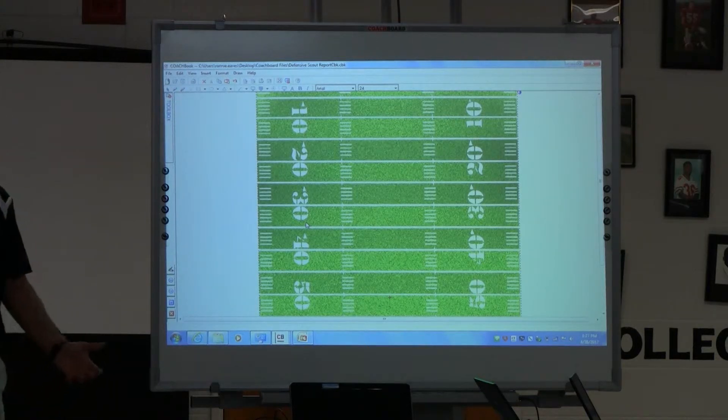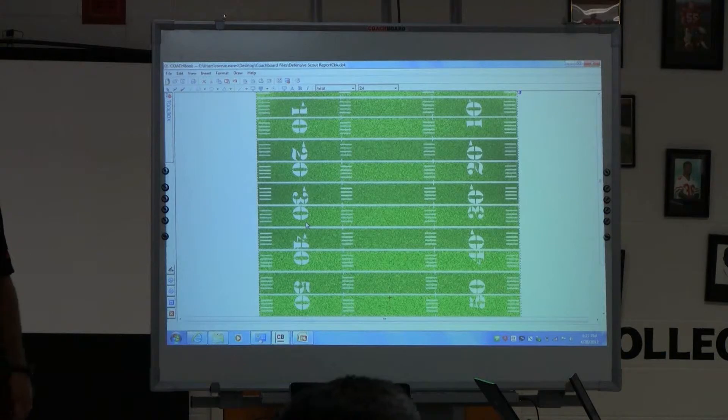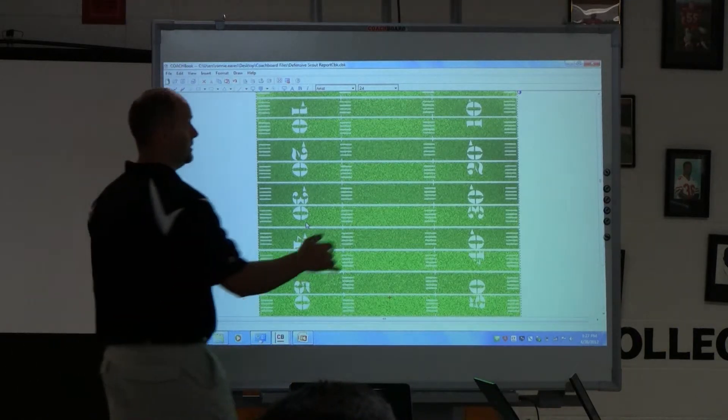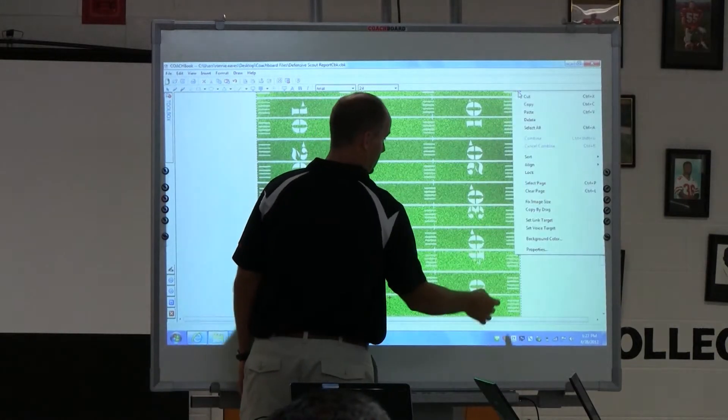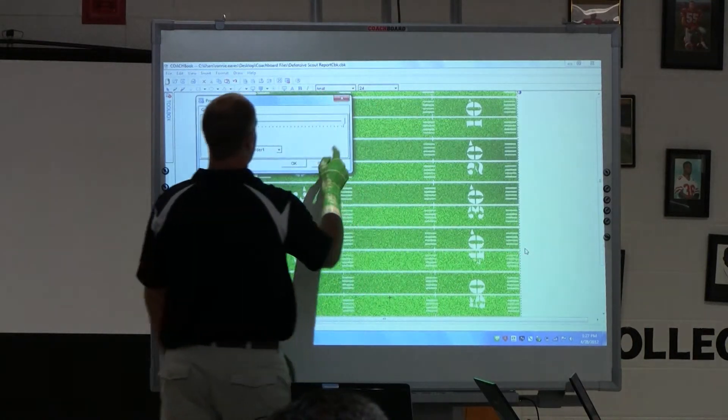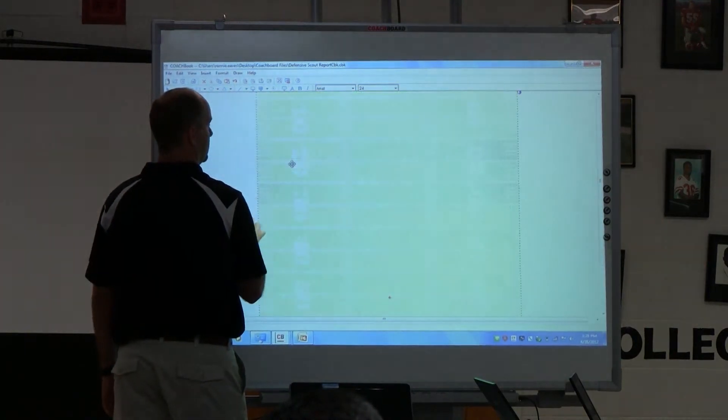Who remembers how to change the opacity of something so it's lighter or darker? That's right. I'm going to right-click over here. I can choose properties, and because it's kind of dark, I can turn the opacity down a little bit.